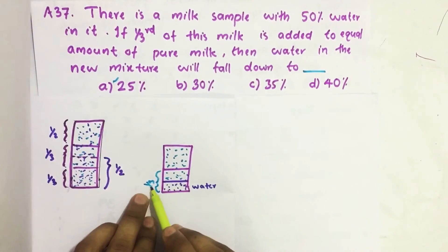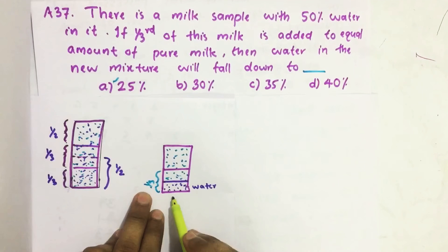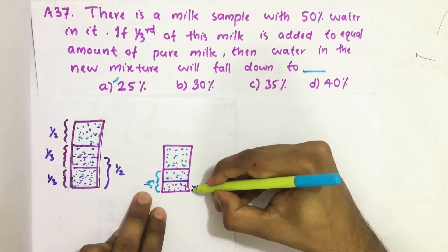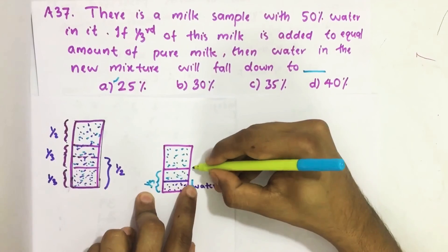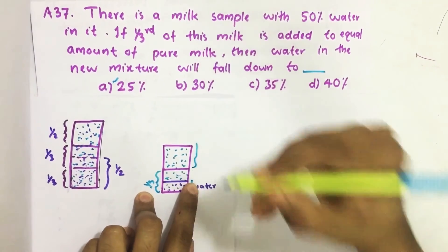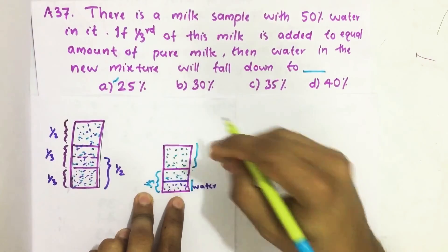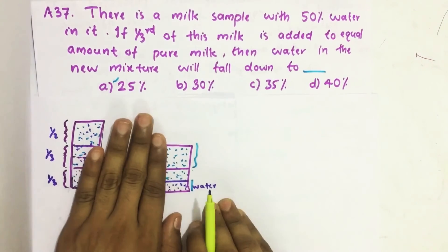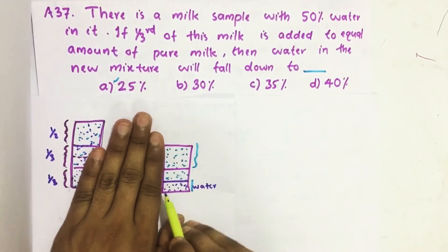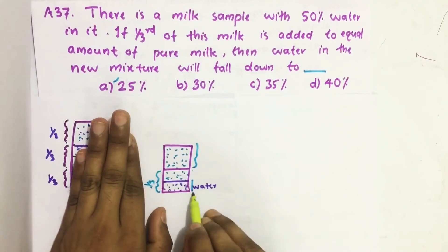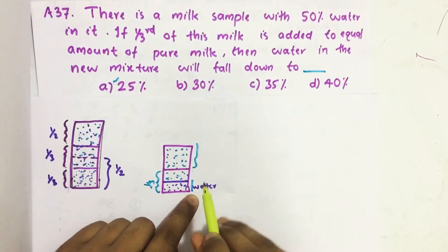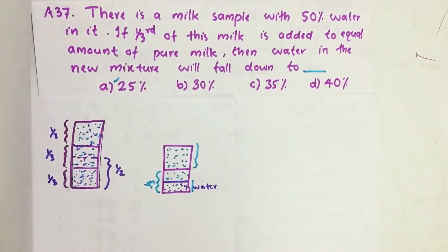Then from this one third of milk which I took from here, 50 percent of this is water. This is water, then the remaining half is pure milk. Then this is pure milk we added. That means if we consider this full jar, 25 percent is one fourth is water. So our answer is option A, 25 percent.